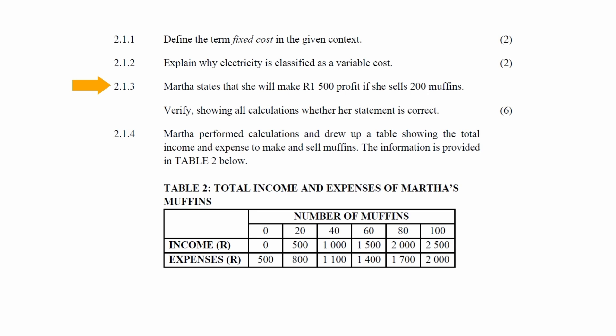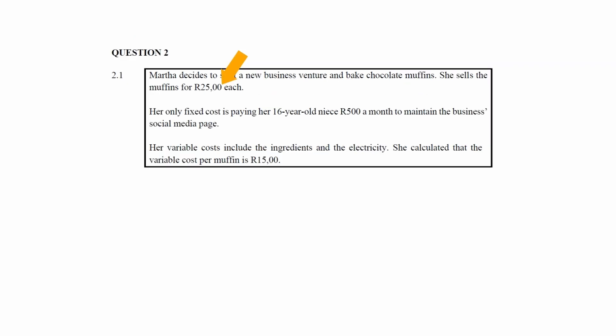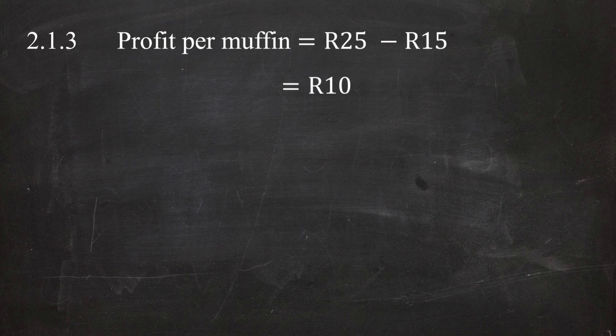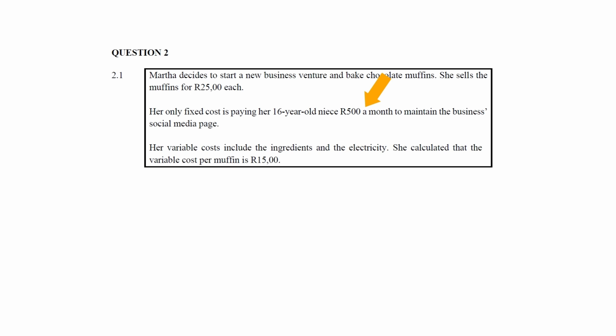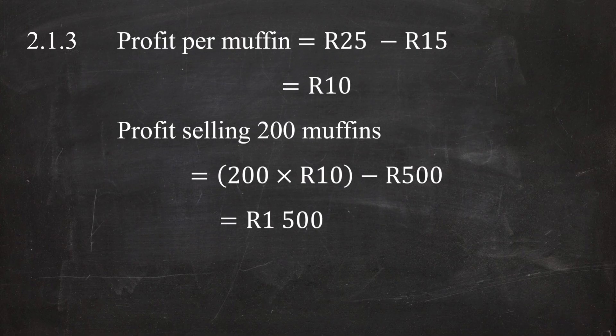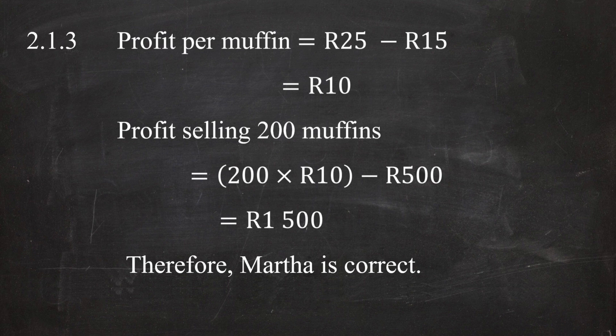In Question 2.1.3, Martha states that she will make 1,500 Rand profit if she sells 200 muffins. You will have to verify, showing all calculations, whether her statement is correct. The profit per muffin sold is the selling price of 25 Rand minus the variable cost of 15 Rand, which equals a profit of 10 Rand per muffin. The profit for selling 200 muffins is 200 multiplied by 10 Rand, minus the fixed cost of 500 Rand, which equals 1,500 Rand profit.